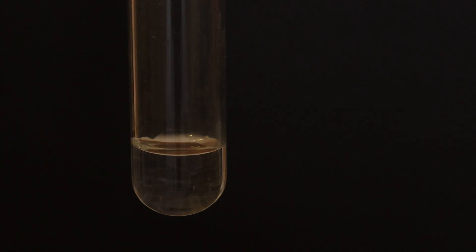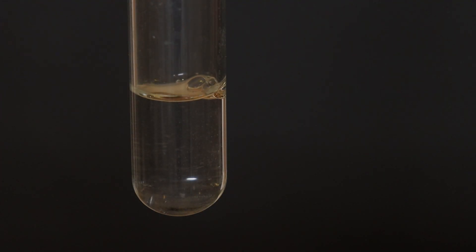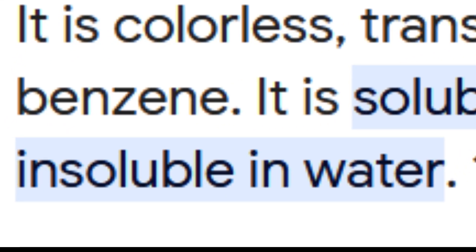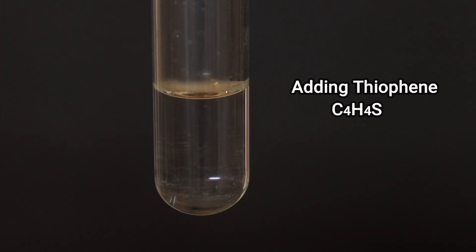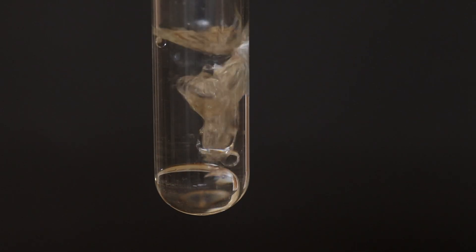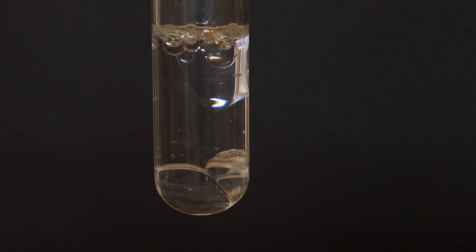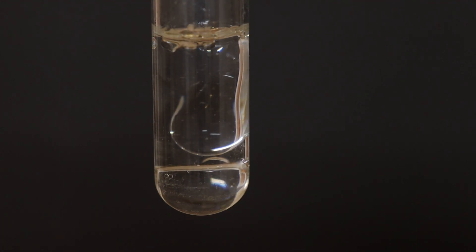Thiophene is a colorless liquid with an unpleasant smell reminding of rotten sausages. It is insoluble in water — let's check that. Thiophene is denser than water, thus it sinks to the bottom of the test tube. This effect reminds me of a lava lamp.